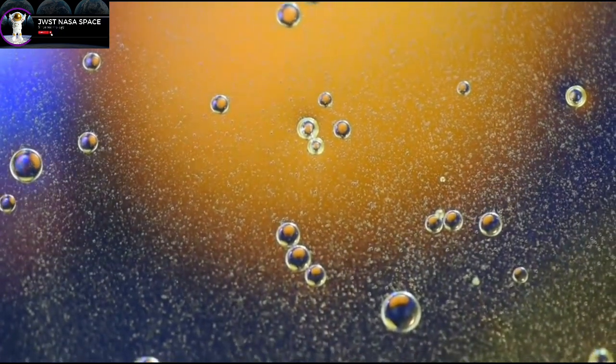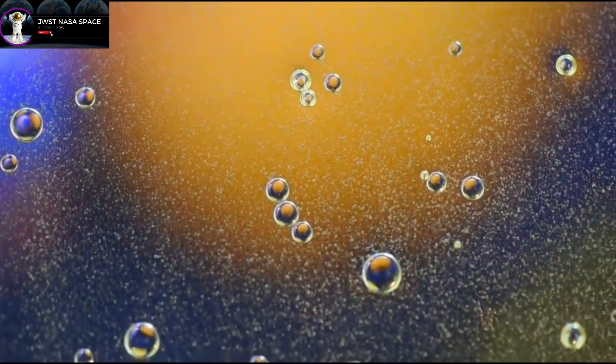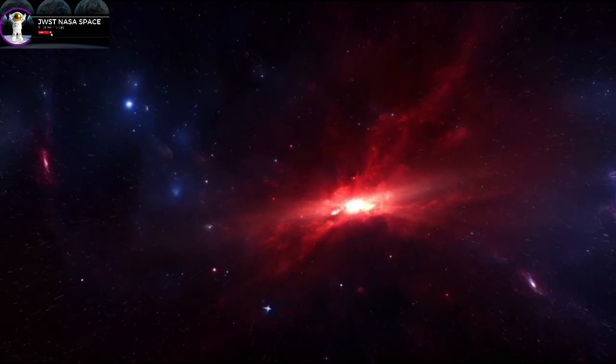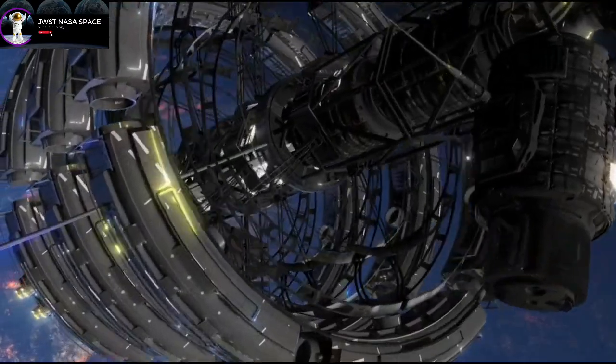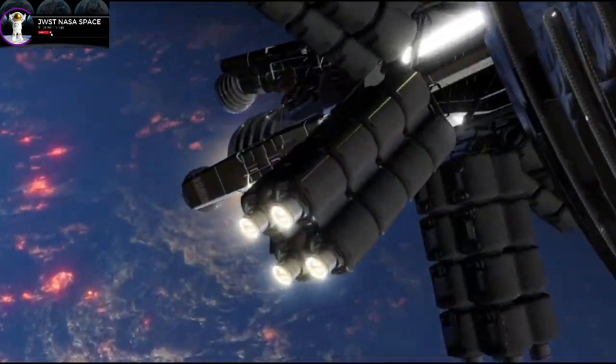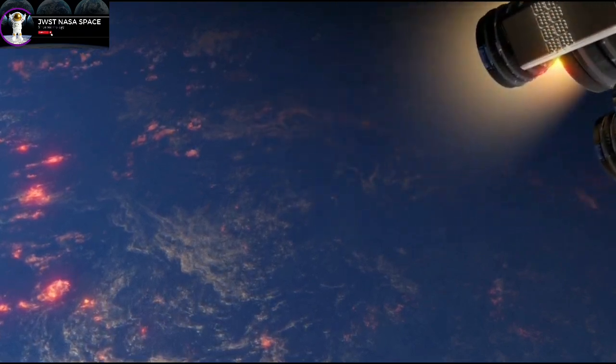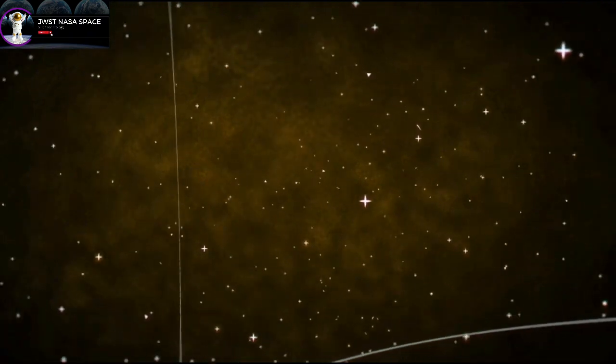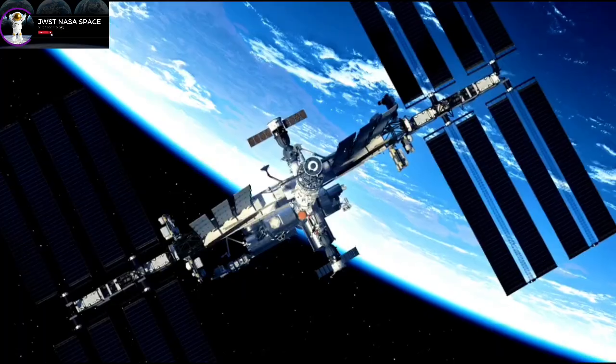It would take 75,000 years for a spacecraft like Voyager 2 to arrive at the Proxima Centauri system. That said, proposals have been made involving solar sails—ultra-thin sails that could be used to accelerate a spacecraft toward the Alpha Centauri system and Proxima b.